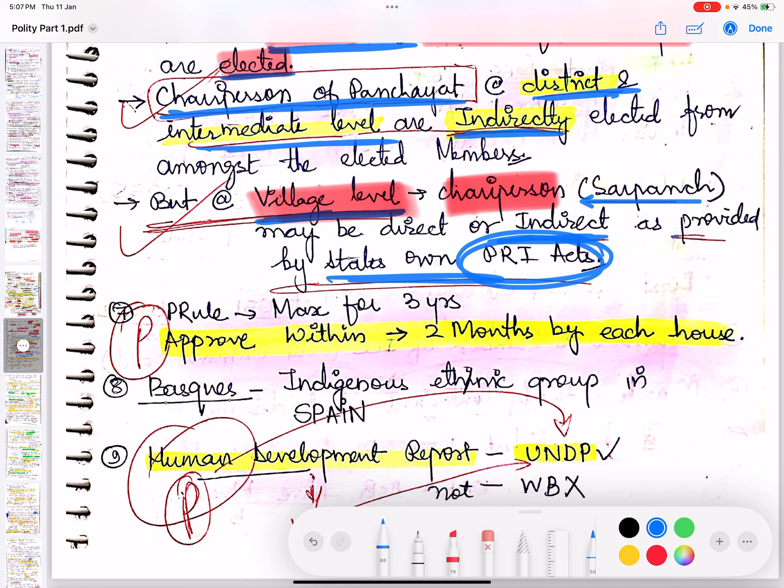President's Rule - maximum according to Constitution, it can be imposed for 3 years, and it should be approved within 2 months by each house. National Emergency, remember, has to be approved within 1 month, which we discussed yesterday.